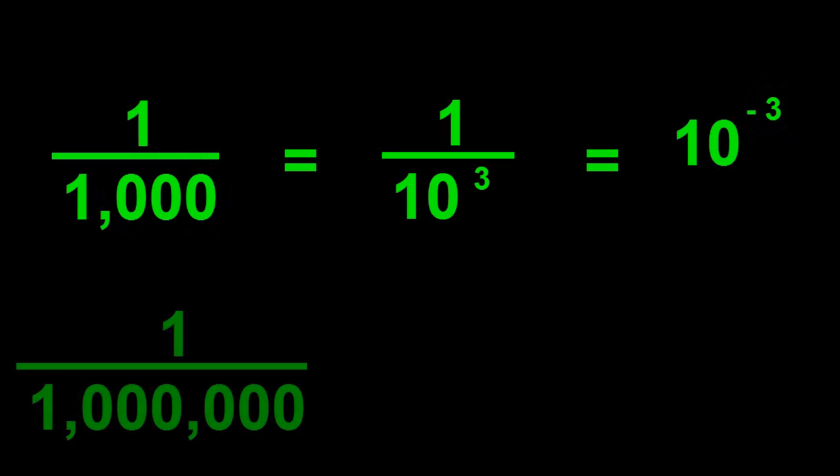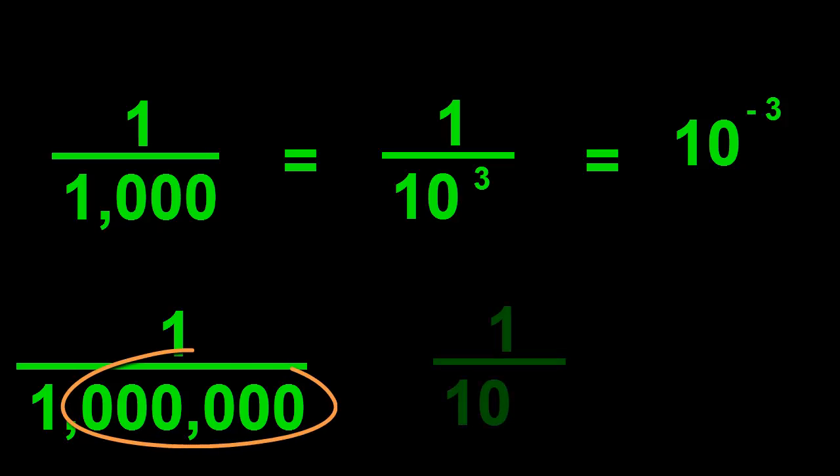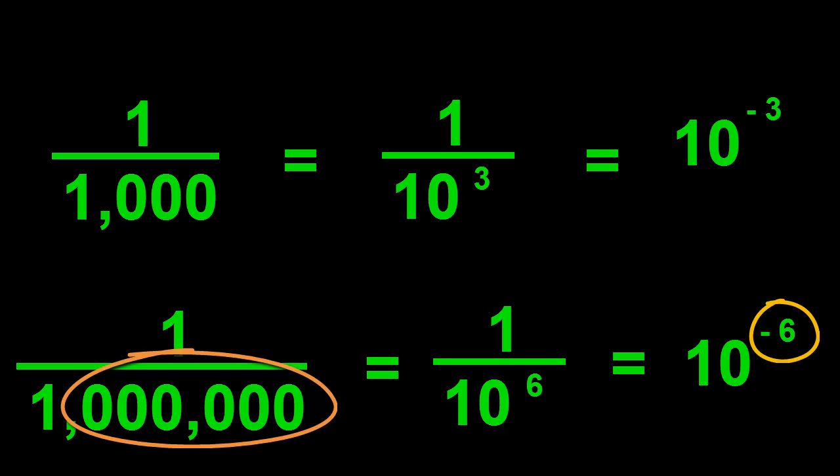What's one over a million? A million's got six zeros. So that's ten to the minus six. When there are lots more zeros, it gets way quicker to write it this way. We'll show both ways of writing it from now on.